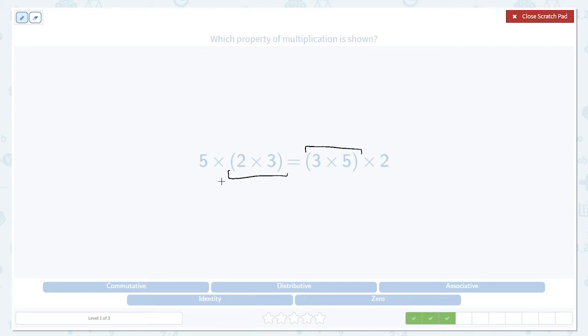We do our parentheses first. 2 times 3 is 6. 5 times 6 will be 30. On the other side, 3 times 5, that's 15. 15 times 2 is also 30. This is the associative property in action.